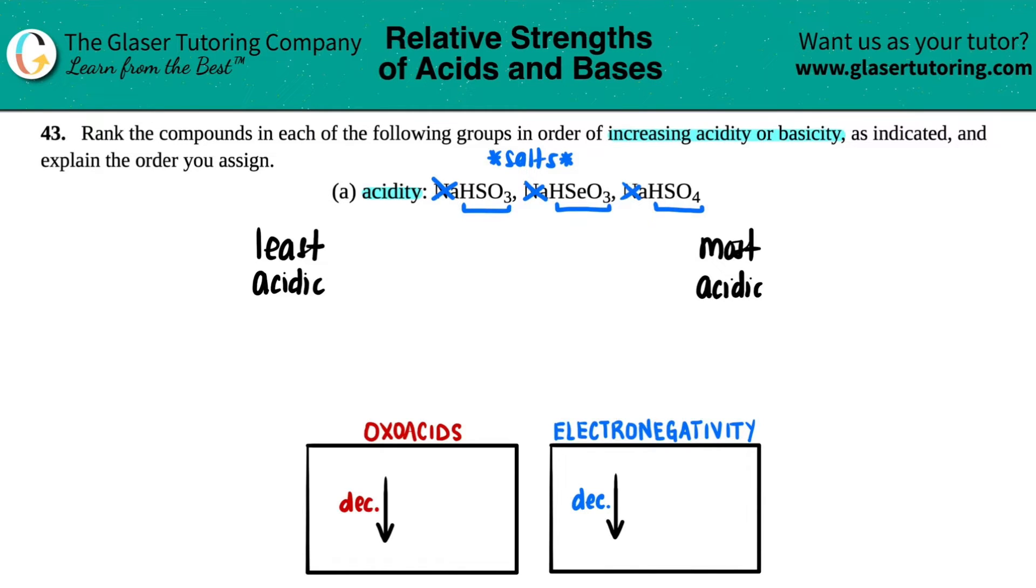We have to think, okay, what type of acid is that where I have a hydrogen in the front, I have an oxygen or a couple of oxygens in the back, and then I have a random element in the middle? We'll call that X. These are oxo acids.